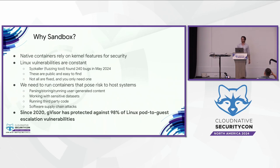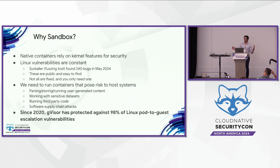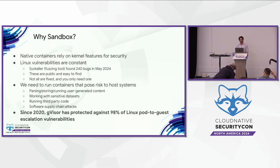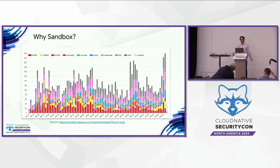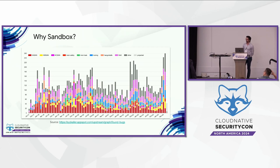The good news is that the data we have show that sandboxing really works. Our internal tracking shows that GVisor protected against almost every pod-to-guest escalation in the past several years. In summary: the kernel is a huge attack surface, known to be buggy, that we depend on to isolate containers from each other. We need to run inherently risky containers, and sandboxing is a proven way to mitigate that risk. Here are all the kernel bugs found by Syscaller in the past few years sorted by month and category — all it takes is one to rise to a vulnerability.